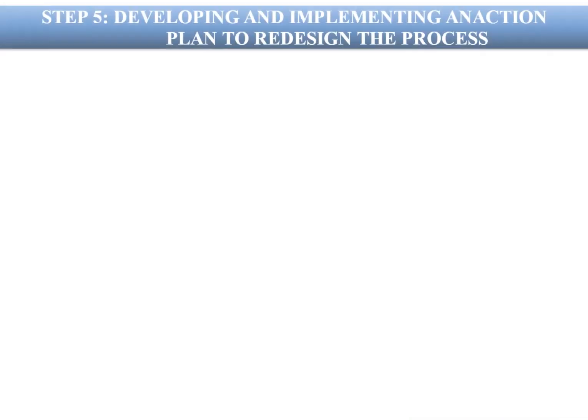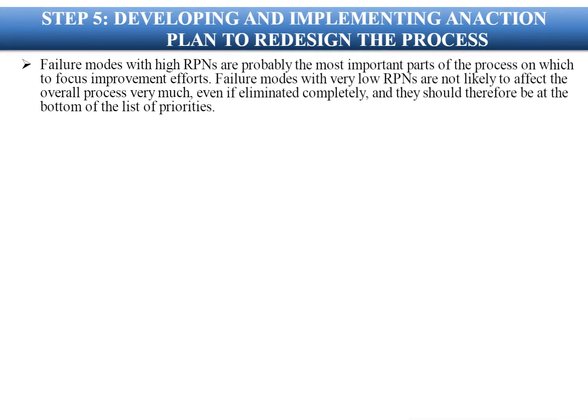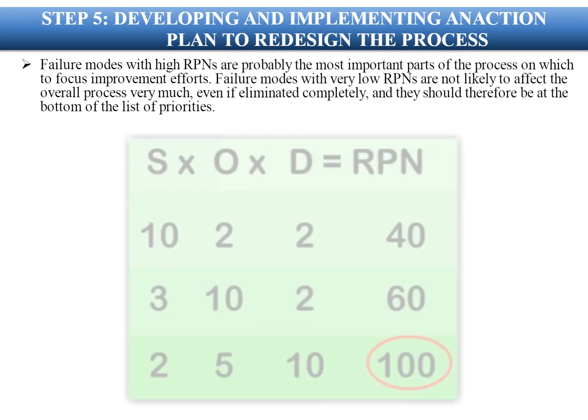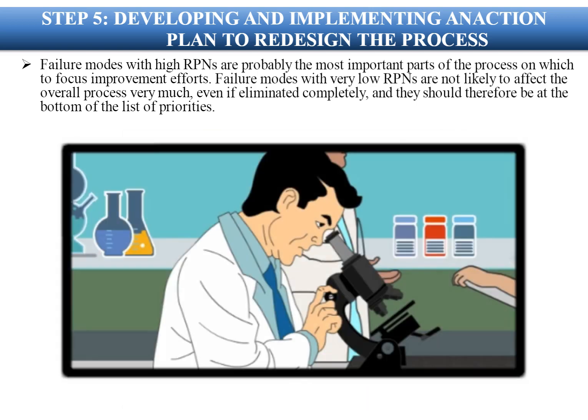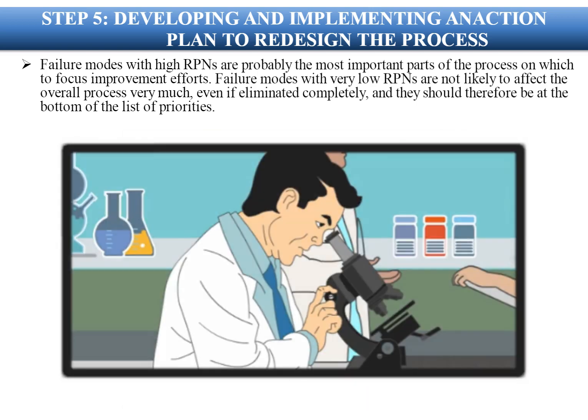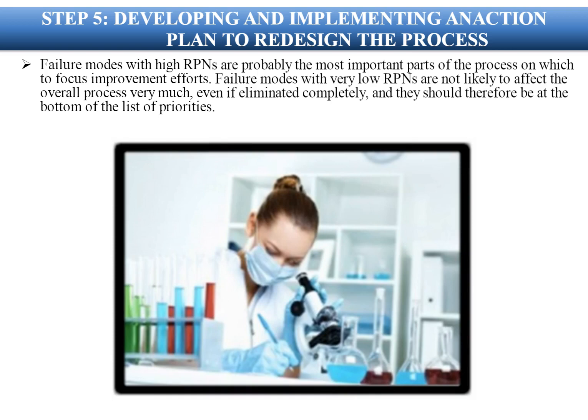The total RPN value decreased after reorganization. Developing and implementing an action plan to redesign the process is key. Failure modes with high RPNs are the most important parts of the process on which to focus improvement efforts. Failure modes with very low RPNs are not likely to affect the overall process much, even if eliminated completely, and should therefore be at the bottom of the priority list.